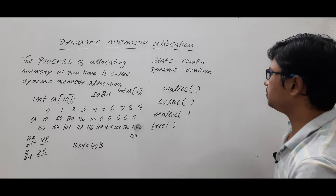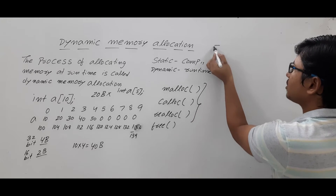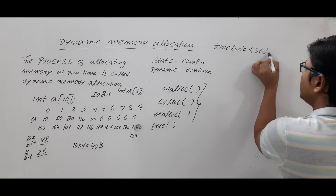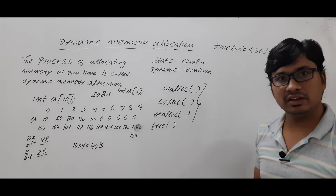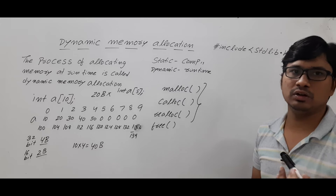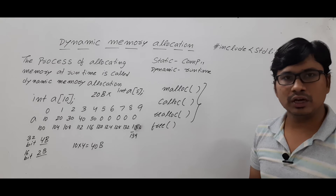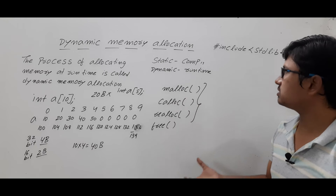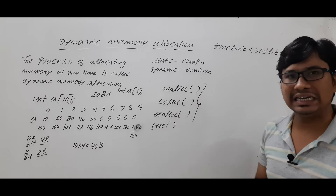To use these four functions you need to include the header file stdlib.h. Just as we include string.h for string handling functions like strlen and strcpy, and stdio.h for printf and scanf, similarly you include stdlib.h to use malloc, calloc, realloc, and free.